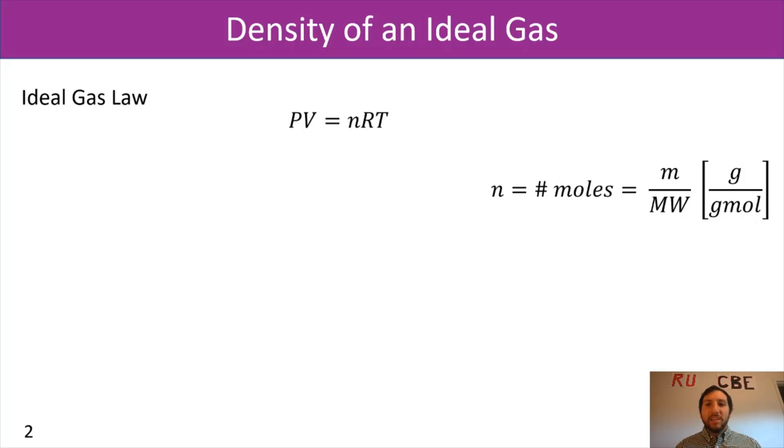As you remember, n is equal to the number of moles, but it also will equal your mass divided by the molecular weight of your chemical species. So what we can do is we can substitute that m over molecular weight into our ideal gas law, so that we get PV equals m over molecular weight times RT.